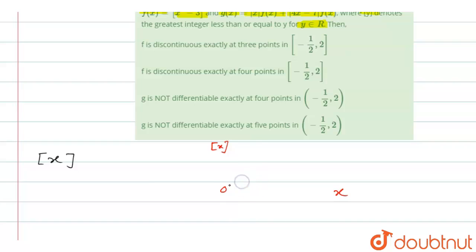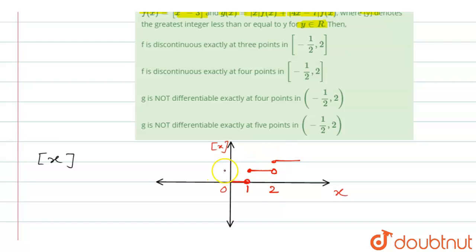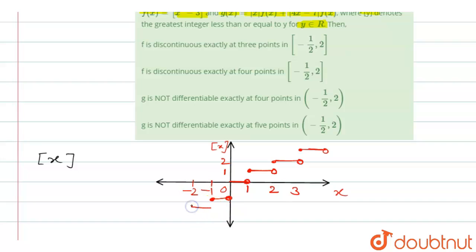Between 1 to 2, the value is 1, and at x = 2 the value is 2. Between 2 to 3, the value is 2, and at x = 3 it equals 3. So the graph is discontinuous at all integer values. Similarly, for negative x: between 0 to -1 the value is -1, and between -2 to -1 the value is -2. Thus ⌊x⌋ is discontinuous at all integer values.